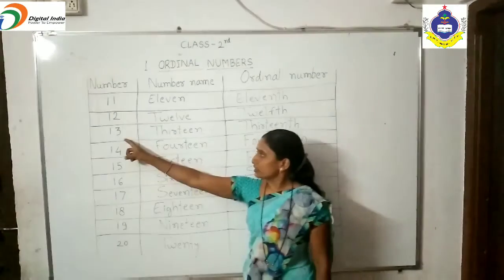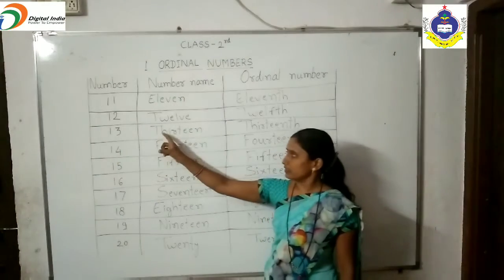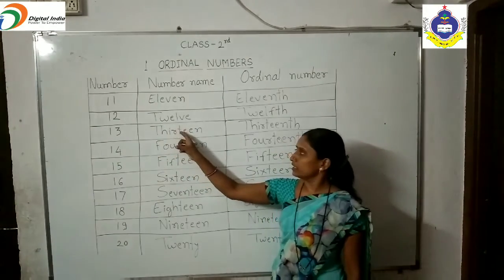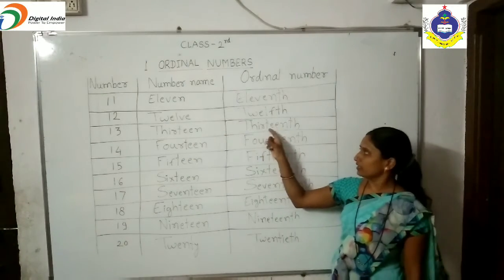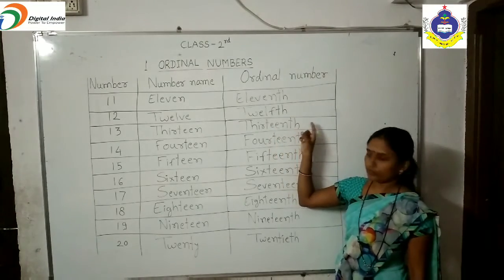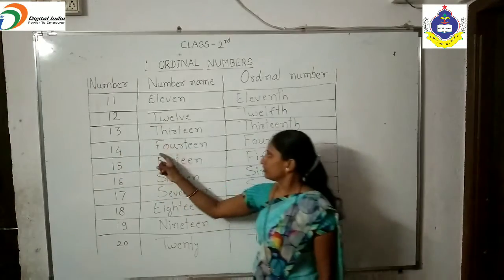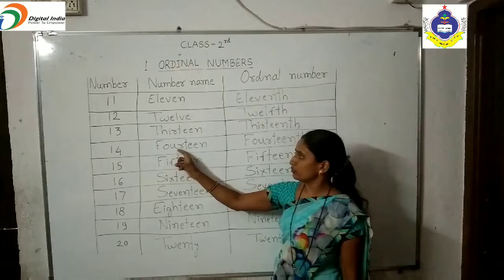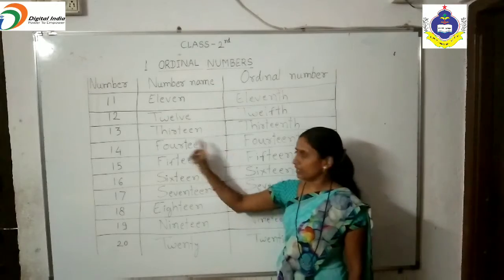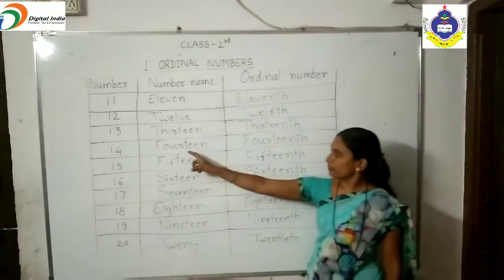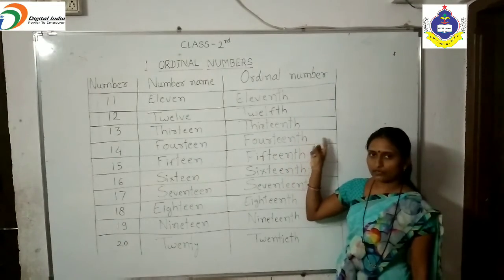The spelling of twelfth is T-W-E-L-F-T-H. Okay? Thirteen: write down thirteen in the number column. The number name is T-H-I-R-T-E-E-N, and its ordinal number is T-H-I-R-T-E-E-N-T-H, thirteenth. Write T-H in front of 13. Now 14: the number name is F-O-U-R-T-E-E-N, and its ordinal number is F-O-U-R-T-E-E-N-T-H, fourteenth.